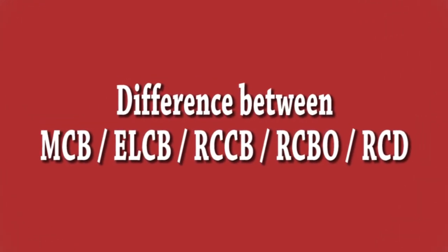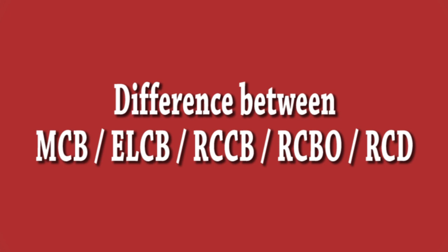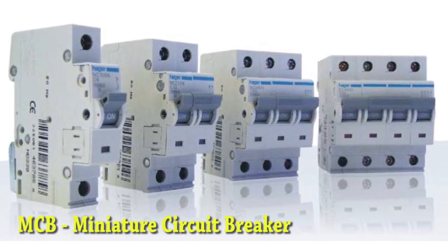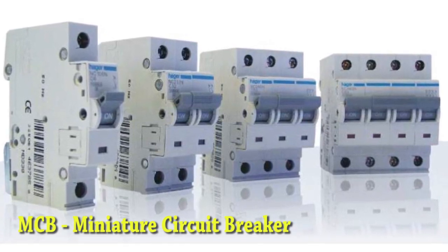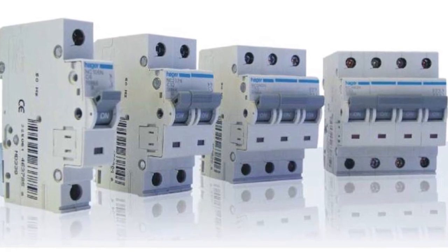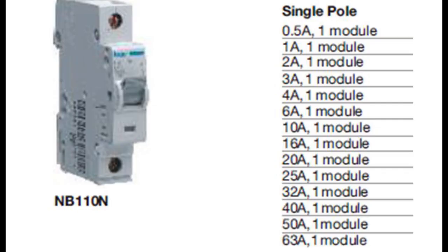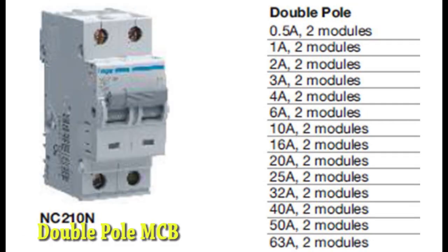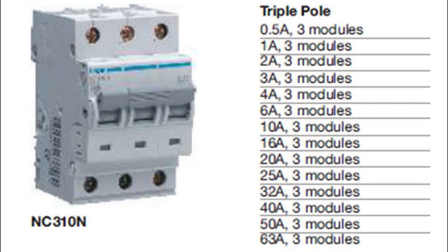The difference between MCB, ELCB, RCCB, RCBO, and RCD. MCB is a miniature circuit breaker which provides protection against overload and short circuit. We have MCB of single pole and its rating varies from 0.5 to 63 amperes. Similarly, MCB comes in double pole with the same rating, that is from 0.5 to 63 amperes.